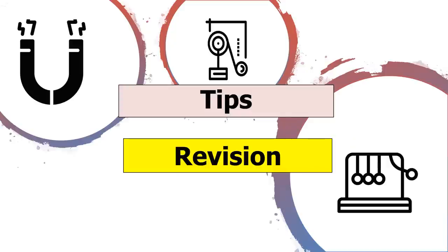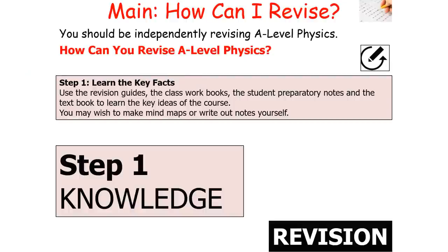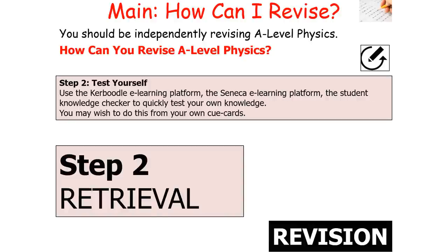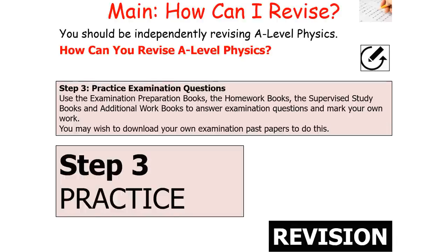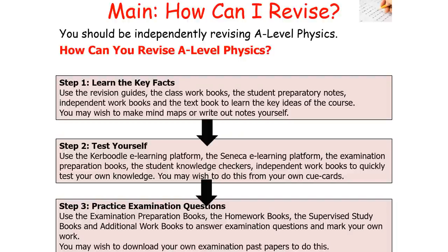How should you revise AQA A-Level Physics? Step one is to learn the key facts — use your revision guides, class workbooks, student prep notes, and textbooks, including making mind maps or writing out notes. Step two is to test yourself using e-learning platforms like Seneca or knowledge checkers, or by making your own cue cards. Step three is to practise examination style questions using exam prep books and past papers, then mark your own work. This cycle of learning, testing, and practising is the way to revise.